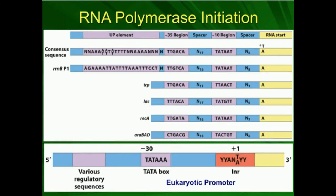Up here in the top box is the prokaryotic system, and down here is for eukaryotes. The yellow boxes on the far right represent the start site for transcription — where the RNA polymerase will ultimately start transcribing the DNA into RNA. If you go to the left, before the yellow boxes, before where transcription actually starts, these regions are called upstream. They are upstream from the start site of transcription, and these upstream sequences are very important for binding of transcription factors.